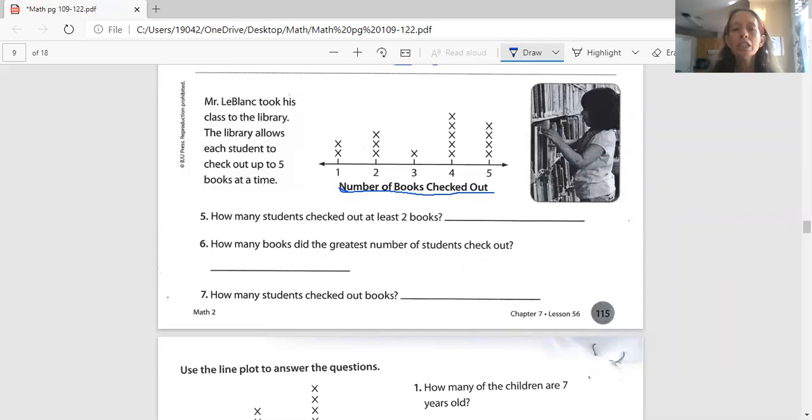Number five says, how many students checked out at least, there's our word again, at least two books. So we're going to count the ones who checked out two, the ones who checked out three, the ones who checked out four, and the ones who checked out five. We don't care about this one, because we're asking at least two books. That's two books or more. So let's count them. 1, 2, 3, 4, 5, 6, 7, 8, 9, 10, 11, 12, 13.